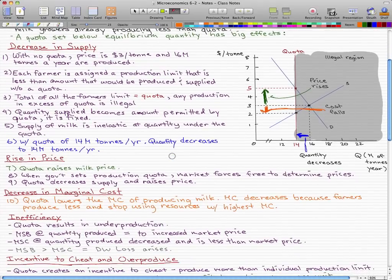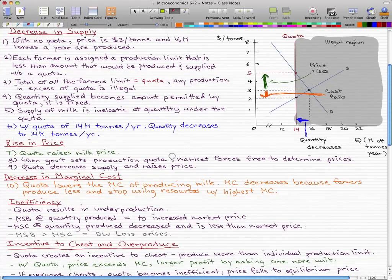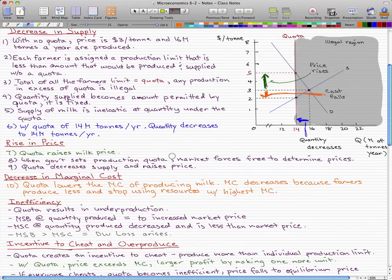Now this also leads to inefficiency. The quota results in underproduction, and the marginal social benefit at the quantity produced is equal to the increased market price, which is five dollars. And the marginal social cost at the quantity produced decreases and is less than the market price.